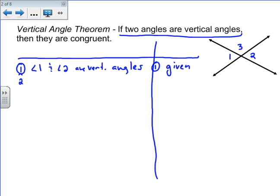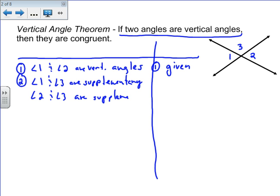Well, angle one and three we can say are supplementary to each other. And for the same reason, we could say that angle two and angle three are supplementary to each other. So it's very easy to go through and show that one and three are supplementary, and two and three are supplementary.